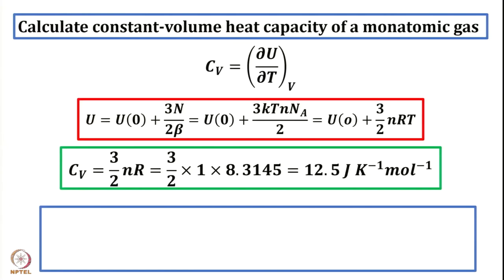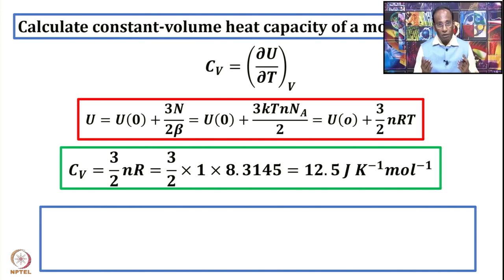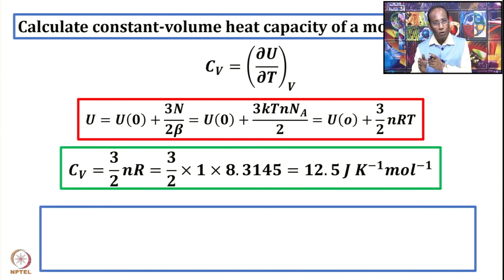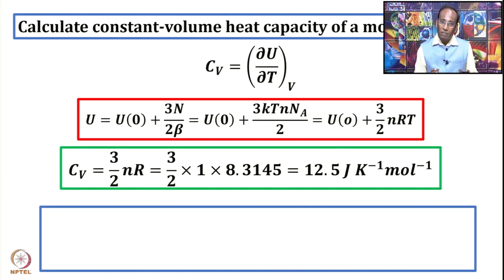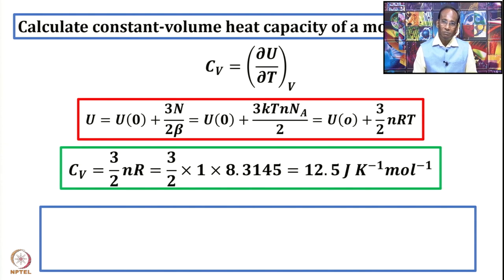Let us take up the first example. In one of the previous lectures, we talked about heat capacity. Heat capacity is a very important thermodynamic quantity because it connects a thermodynamic quantity at one temperature to the same thermodynamic quantity at another temperature — it is a connector for thermodynamic quantities at different temperatures. The literal definition of heat capacity is the amount of heat required to change the temperature of a system by 1 Kelvin.